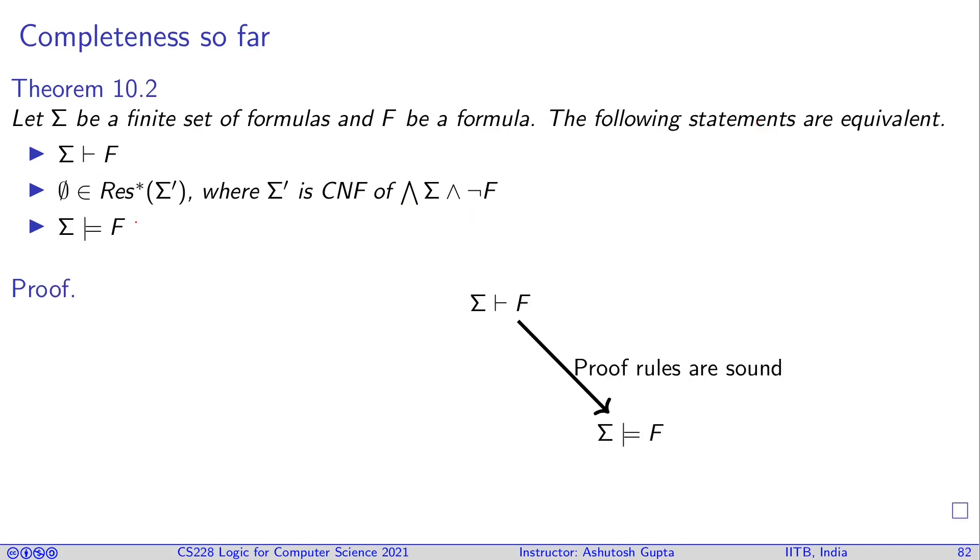So, how do we know them? This is what we have seen in the case of lecture four, where we saw that the sigma proves f, then we know that sigma implies f. So, this is because our proof rules are sound. That connects this to this.